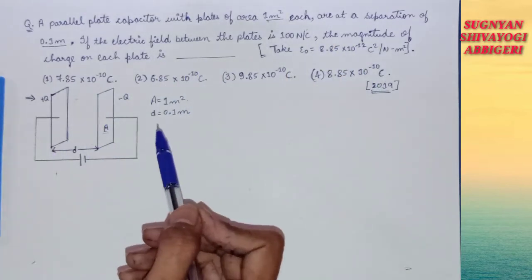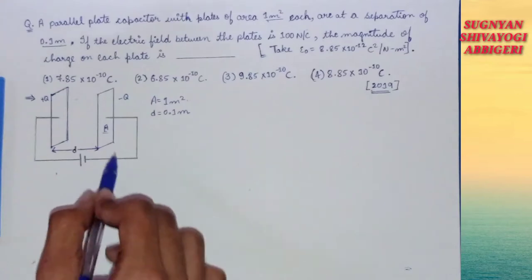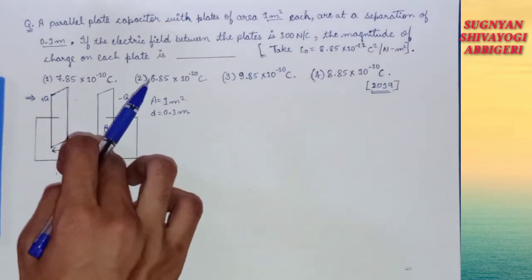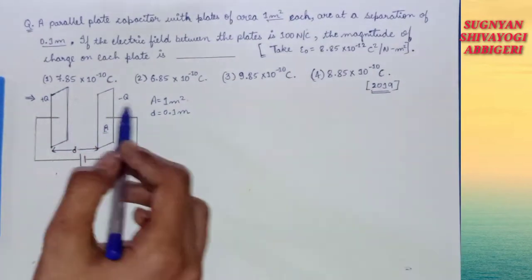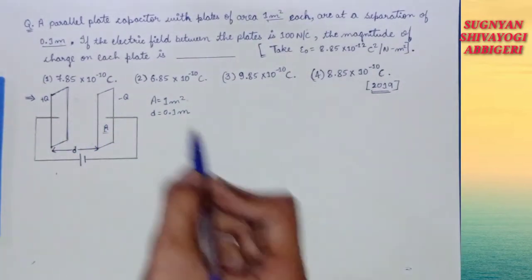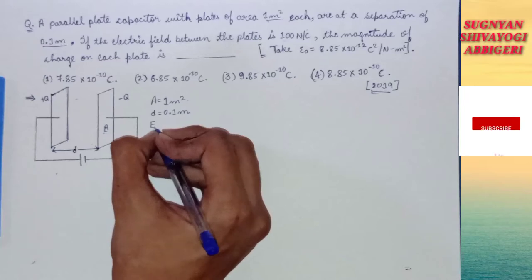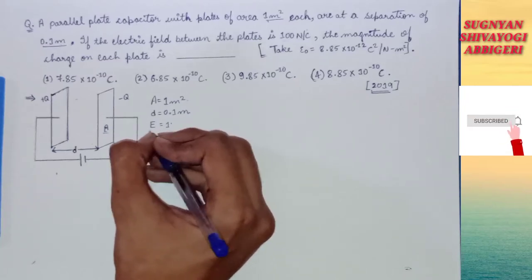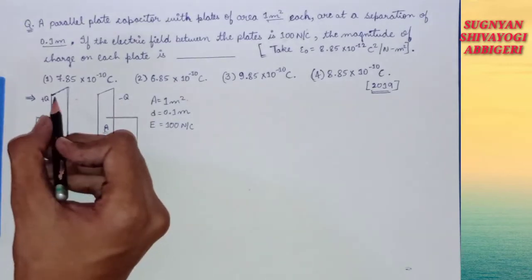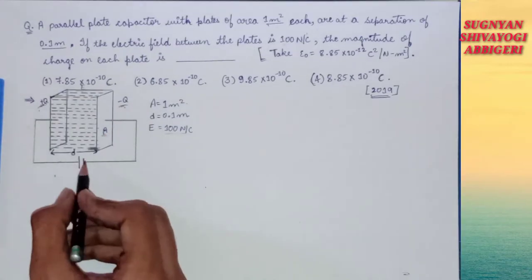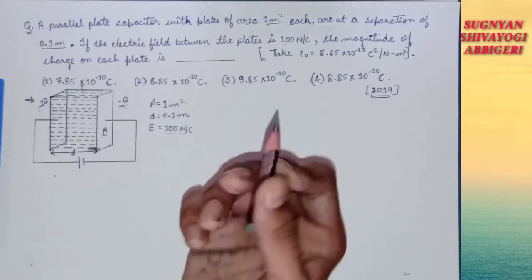Now electric field is given, so let me explain why it plays a role here. Whenever a battery is connected to a capacitor, charges flow and settle on the plates. Whenever charges settle on the plates, there is an electric field created between them. That electric field value is 100 newton per coulomb, represented by capital E. We can draw the electric field with dotted lines between the plates.